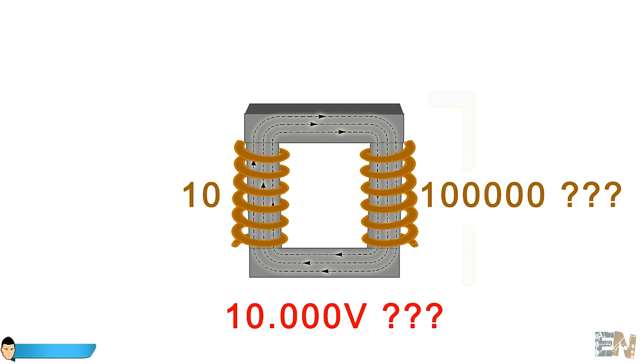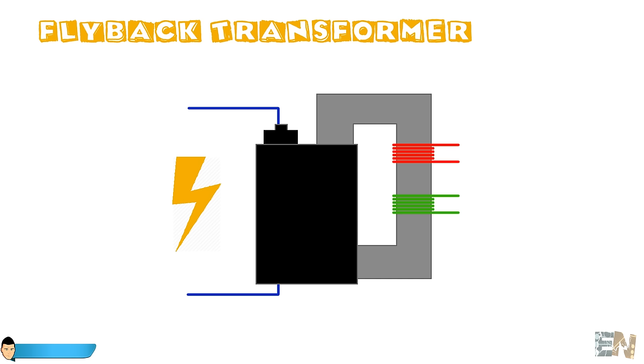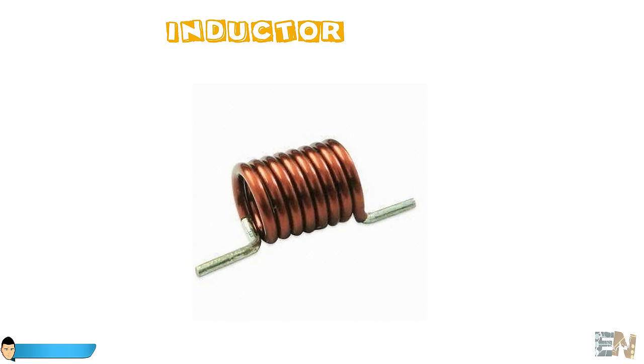The solution to our problem is a flyback converter with a flyback transformer. In order to increase our voltage, we will take use of the inductor properties. Unlike a capacitor that tries as hard as it can to keep the voltage across it as stable as possible by sourcing and syncing surges of current, the inductor tries to keep its current stable as much as it can by searching the voltage across it.